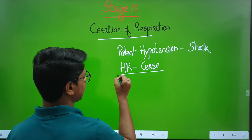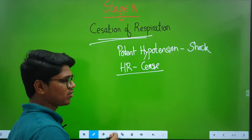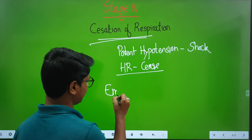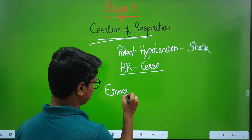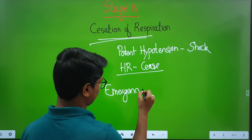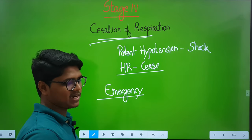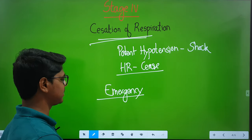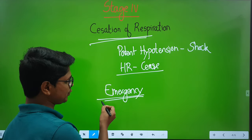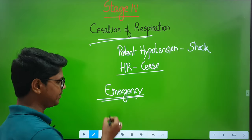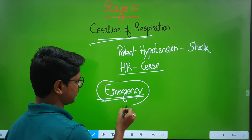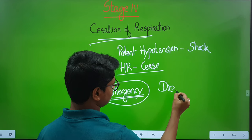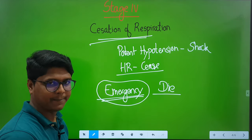If you see an animal entering into this stage, corrective measures or emergency care need to be started — the emergency protocol needs to be started. I already told about emergency and critical care; there is a video in the principles of surgery series you can check. If there is no emergency protocol started, the animal will die.